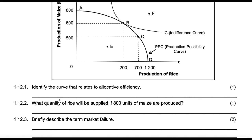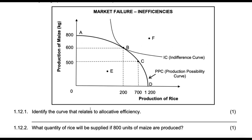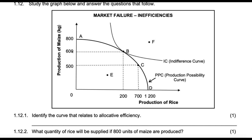What quantity of rice will be supplied at 800 units of maize produced? Well, if we produce 800 maize, then we produce zero rice. The only way we begin to produce rice is by giving up maize. So if we give it up, this is the rice that we gain.